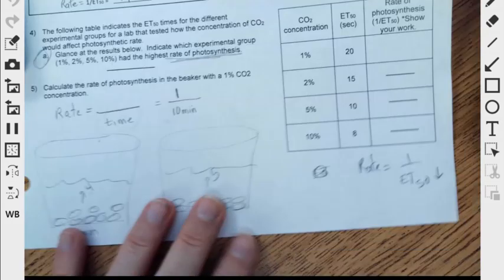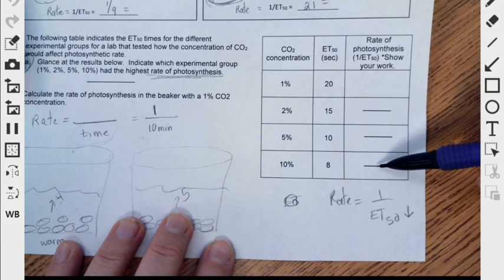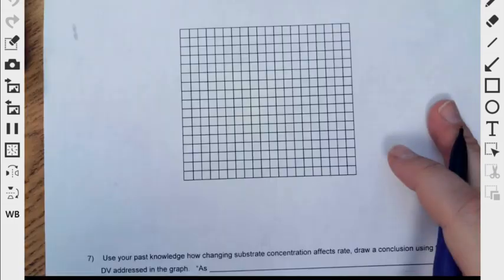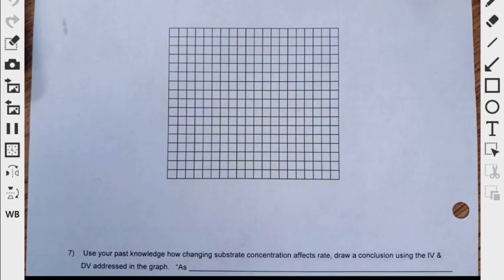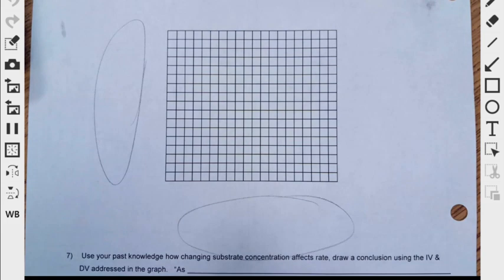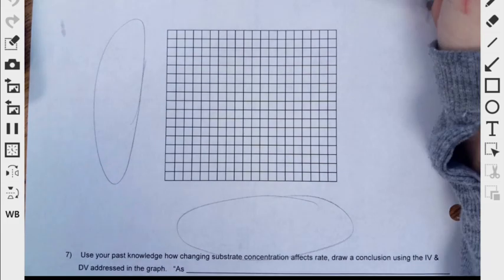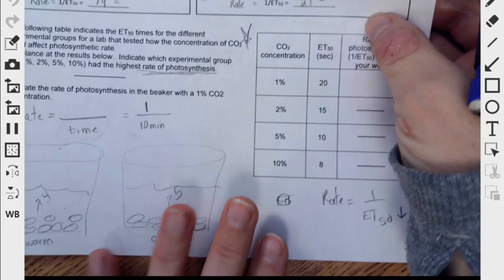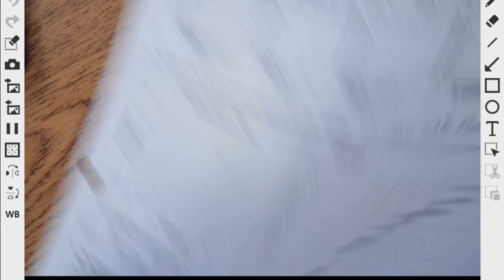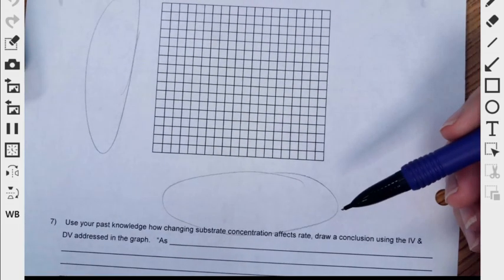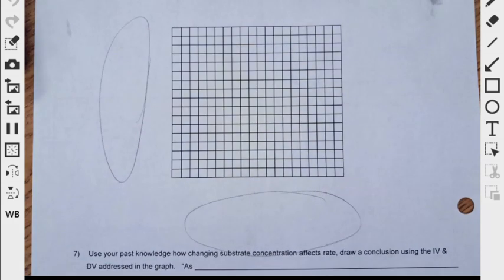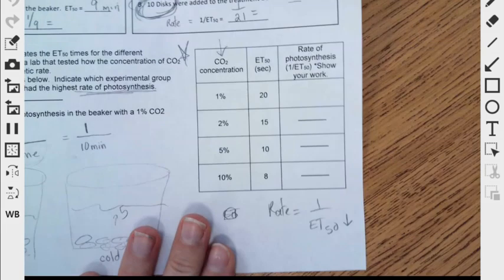Rate equals 1 over ET50. You want the highest rate? Then you better have the one with the lowest time because that means that they shot up very quickly because they're producing a lot of oxygen and that oxygen that makes them come up. So a little test for you. I've got some data here and I know I don't have the rates calculated. Not that big of a deal. So you are going to be asked to graph this data from this table. That's on the back side. It says, create a graph to show how changing CO2 concentrations would affect photosynthetic rate.